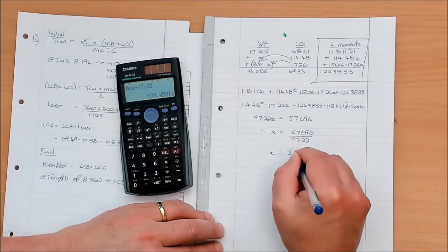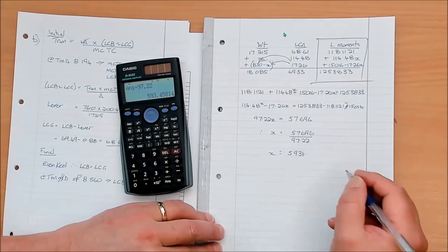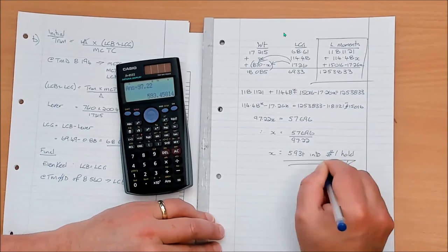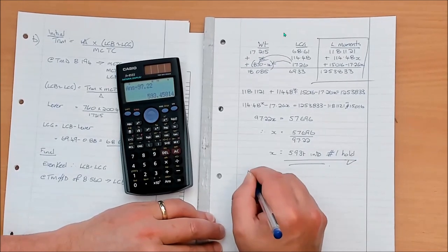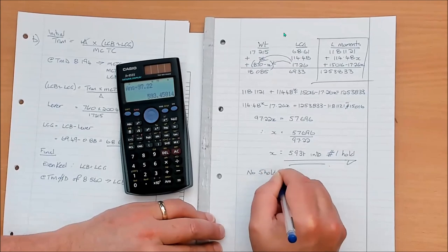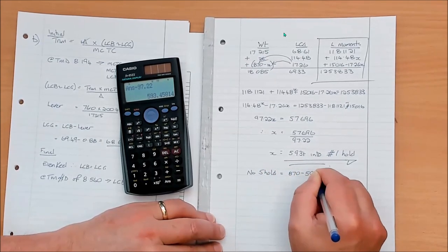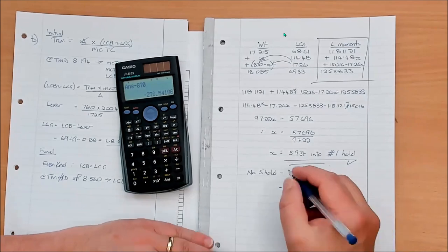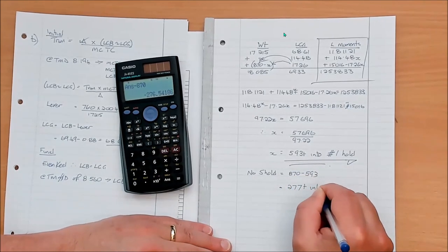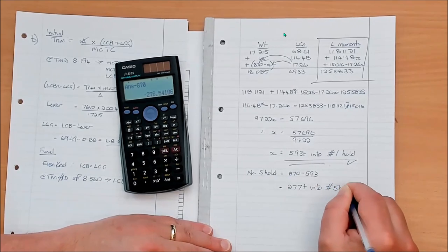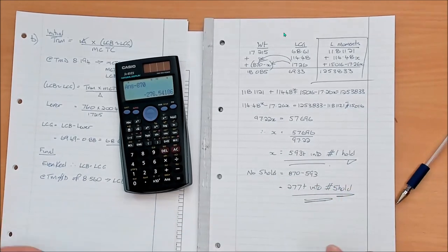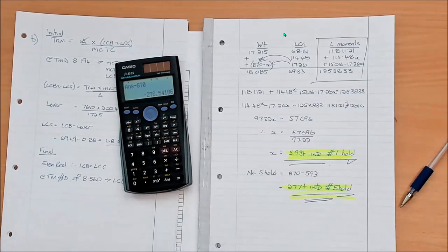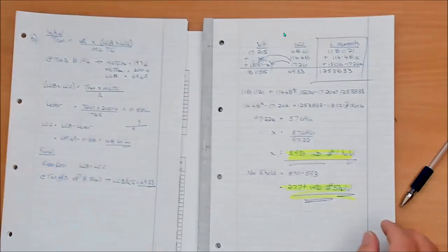So 593 tons into number one hold. Number five hold is the 870 minus 593 equals 277. And again, highlight, highlight please. You want the marker to find your answer easily. You don't want them digging through the haystack to find it. All right.